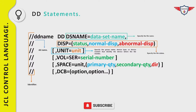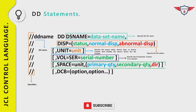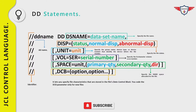VOL=SER specifies the six-character volume serial number of the volume containing the file — also not required if the dataset is cataloged. The SPACE parameter specifies the disk space to be allocated for the file. The DCB parameter specifies the characteristics of the file, including record format, logical record length, and block size.